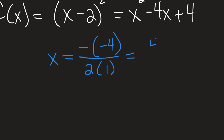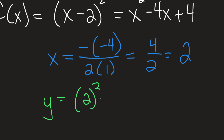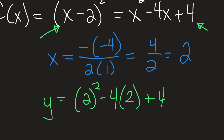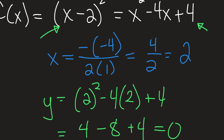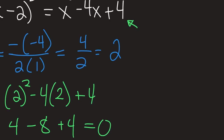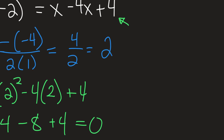Now we can find the vertex. The X coordinate uses our formula: negative B divided by 2 times A. Our B value is negative 4, so negative of negative 4 is positive 4, divided by 2 times 1 — since there's an implied 1 in front of X squared — gives us 2. So our X coordinate is 2. For the Y coordinate, we plug 2 back into the standard form: 4 minus 8 plus 4 equals 0. So the vertex is at the point (2, 0).